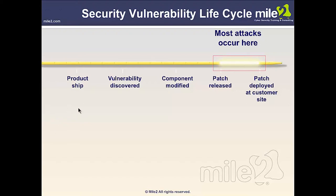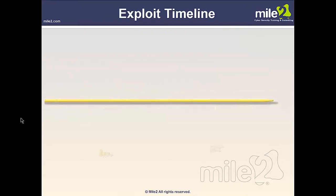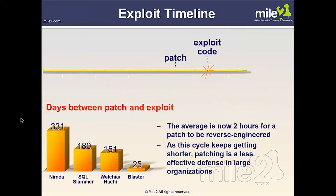Hackers know about this tendency and know systems could be weak during the patch delay window. The average time is now two hours for a patch to be reverse engineered. So essentially, when the patch is out, even if hackers did not know about the vulnerability, they can study what the patch does and figure out what it fixed. Companies need to get into their testing phase quickly and apply the patch as soon as they know it will be stable.